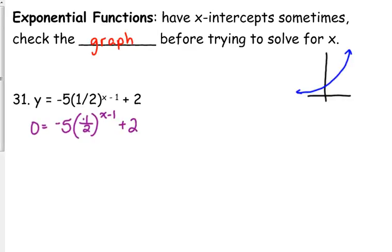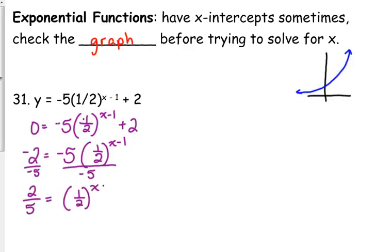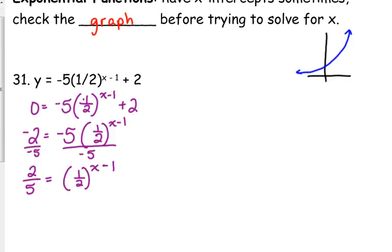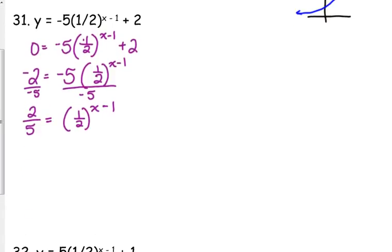So we begin by subtracting 2 from both sides. So we've got negative 2 is equal to negative 5 times 1 half to the x minus 1. Divide by negative 5. So that gives us positive 2 fifths. That's very important because what are we going to have to do next to solve for that variable?